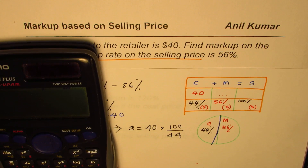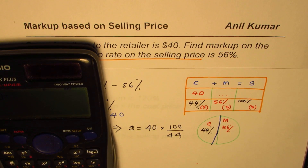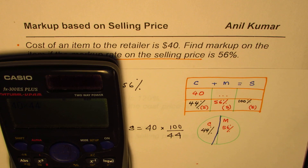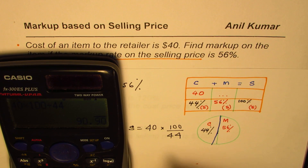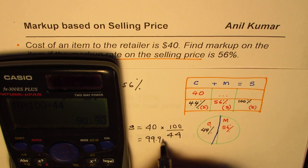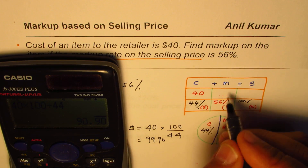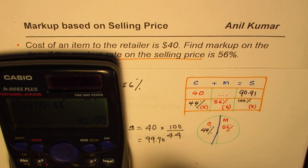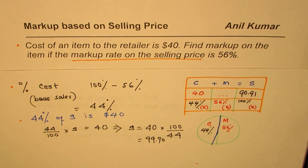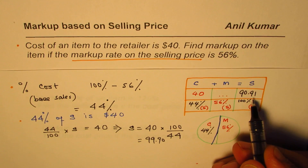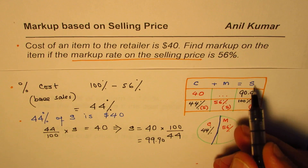Sales equals 40 times 100 divided by 44. That gives us a value of 90.90 repeating, so we can write this as $90.91 — rounding to the nearest cent. So $90.91 becomes the sale price for this item.